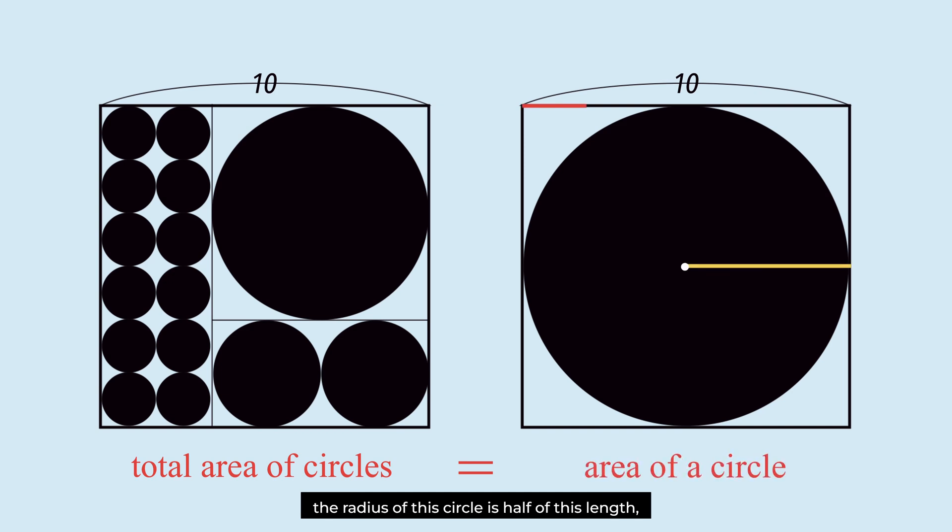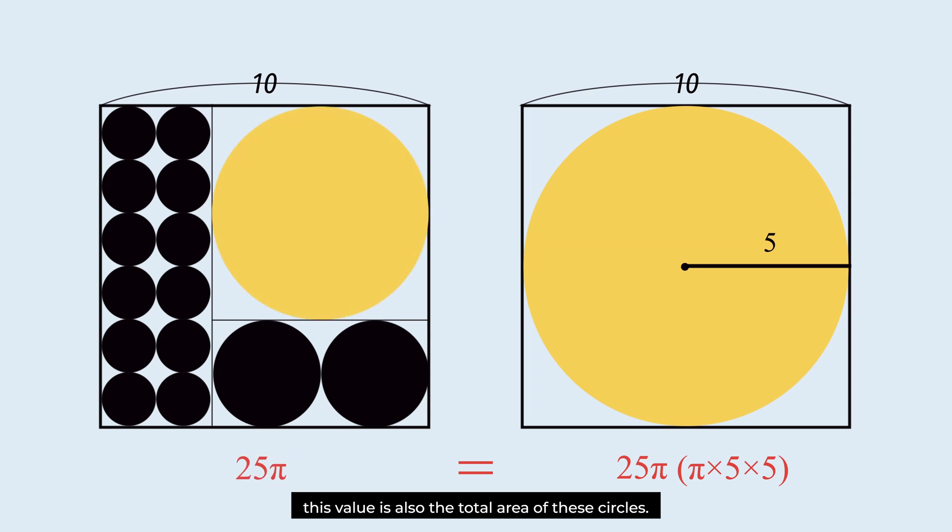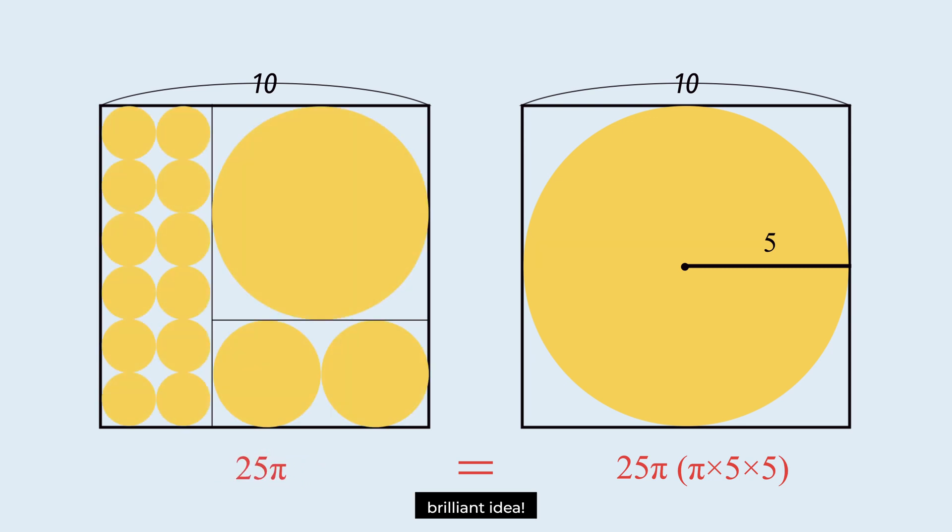The radius of this circle is half of this length, which is 5. So, the area of this circle is 25 pi. This value is also the total area of these circles. Brilliant idea!